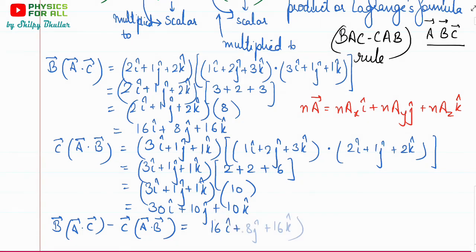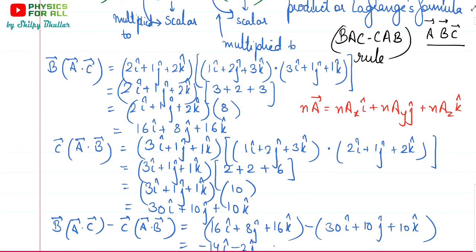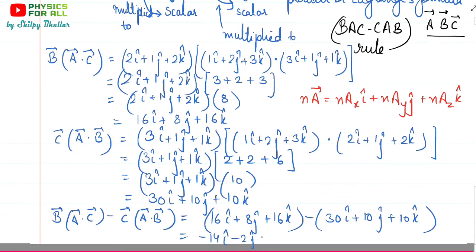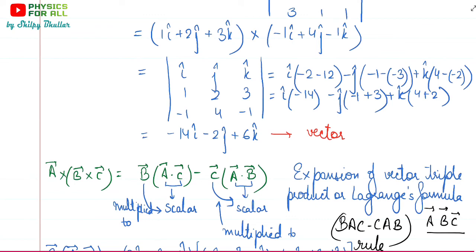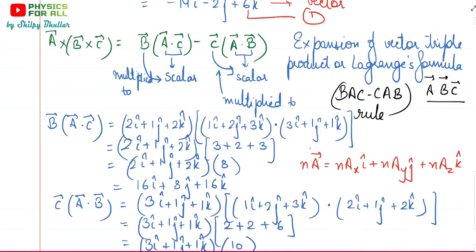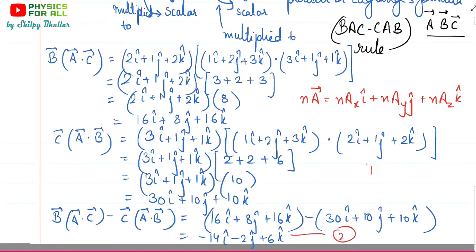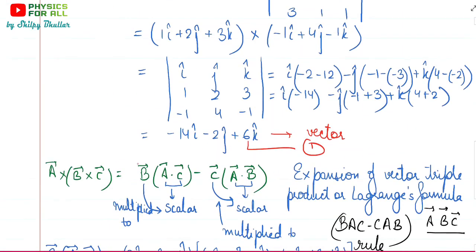Now subtracting BAC minus CAB — this is simply vector subtraction. The result is: (16 − 30) i-cap + (8 − 10) j-cap + (16 − 10) k-cap = −14 i-cap − 2 j-cap + 6 k-cap. This matches exactly what we computed directly for a×(b×c), confirming the BAC-CAB rule is correct.